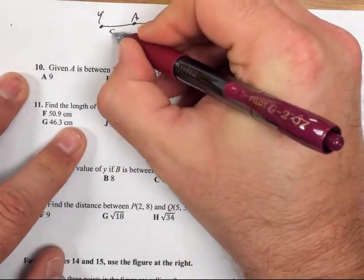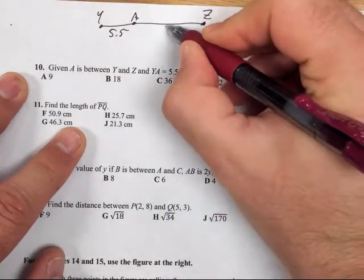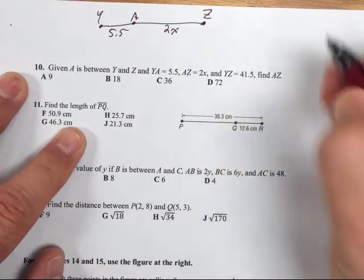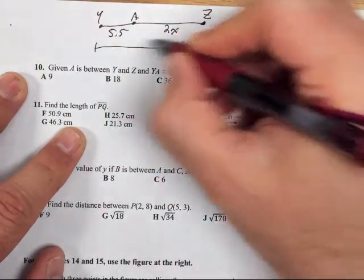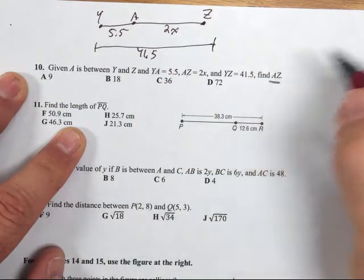YA is 5.5. AZ is 2X. And YZ is 41.5. And it wants us to find the distance from A to Z.